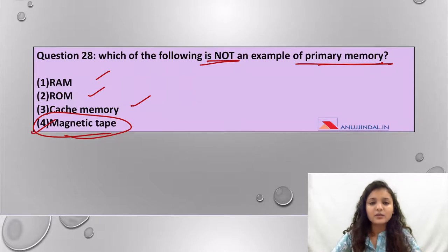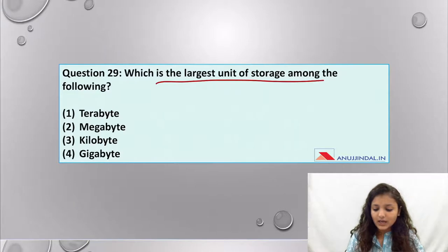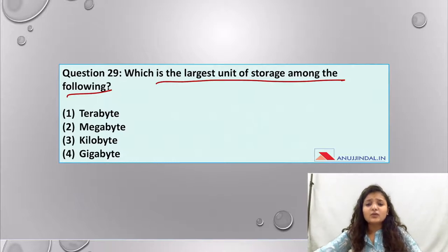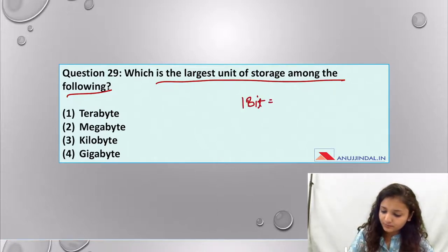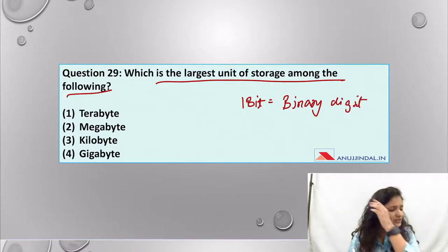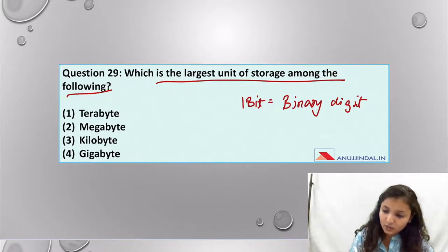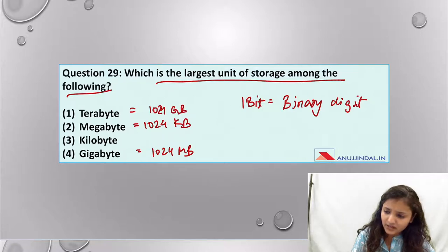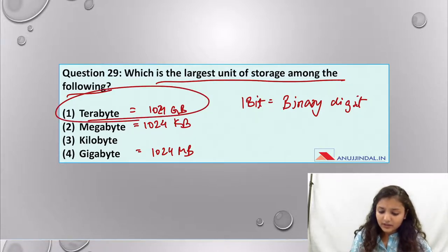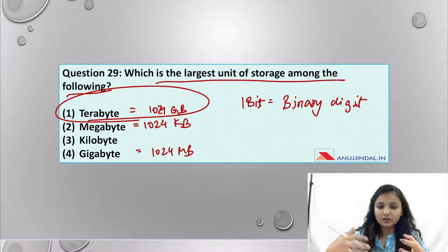Question 29: which is the largest unit of storage among the following? One bit equals one binary digit. Let me start with the smallest: 1024 kilobytes equals 1 megabyte, 1024 megabytes equals 1 gigabyte, 1024 gigabytes equals 1 terabyte.